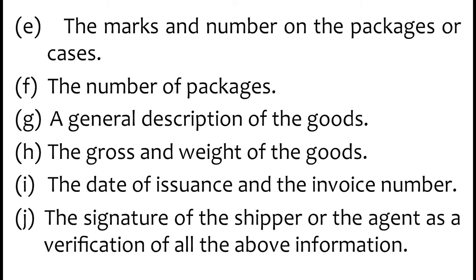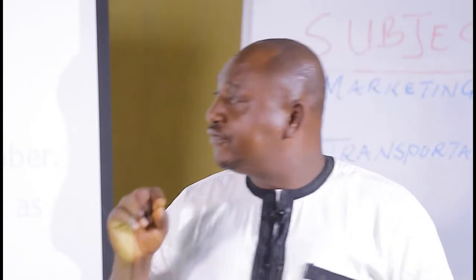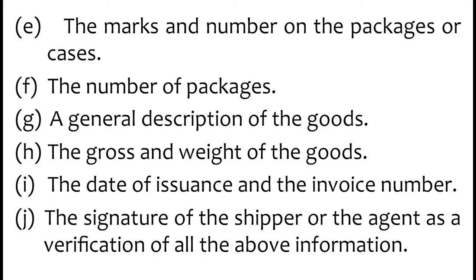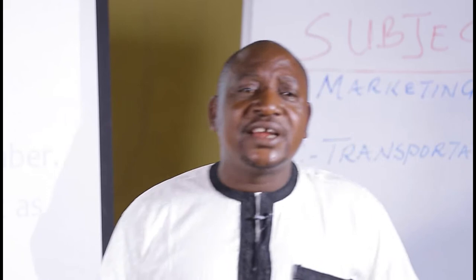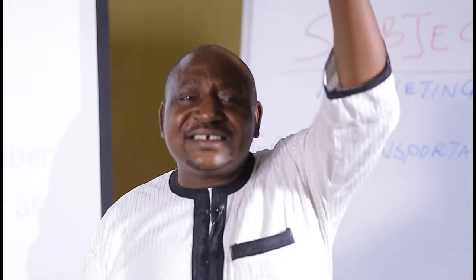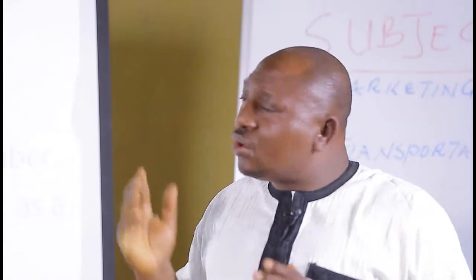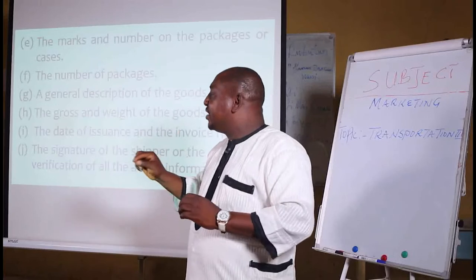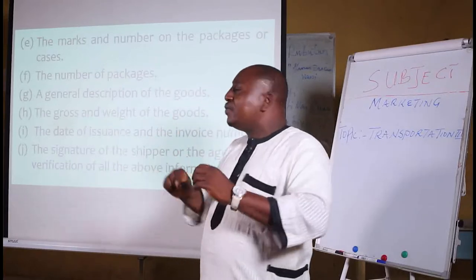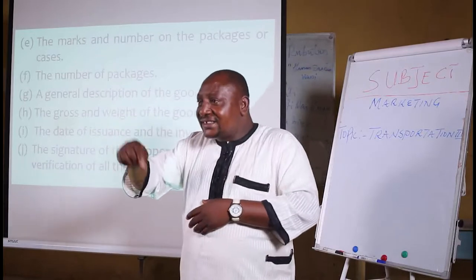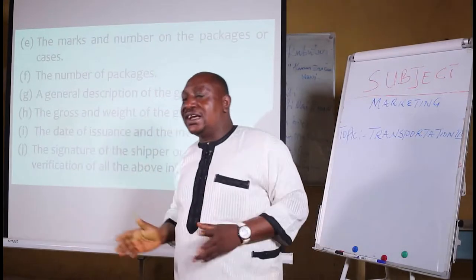Then the date of issuance and the invoice number: there must be a date of issuance and the invoice number. Then the signature of the shipper or the agent as a verification of all the above information — all the information that are to be carried from the starting point, that is the port, to the delivering point. Everything in every document — whether bill of lading, air bill, or the consignment note — there must be every evidence that the signature of the shipper or that of the agent is in order for the goods to be cleared.